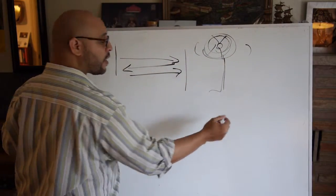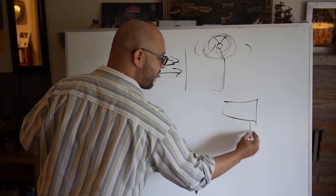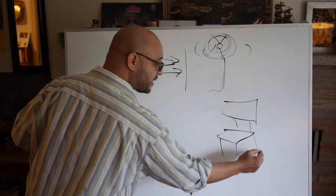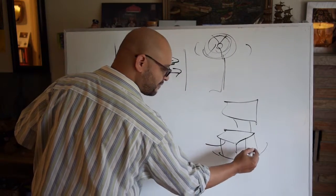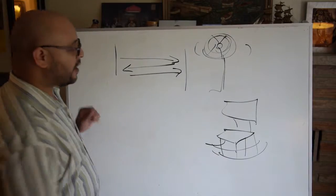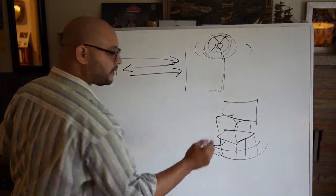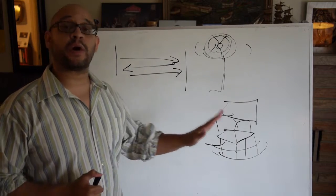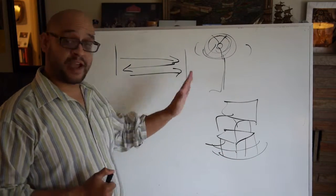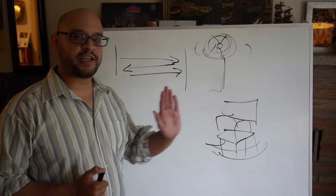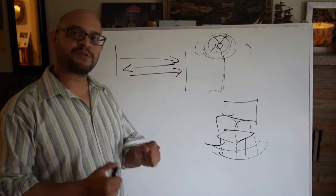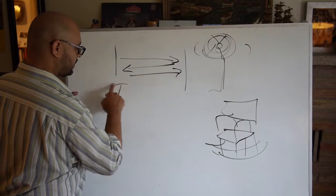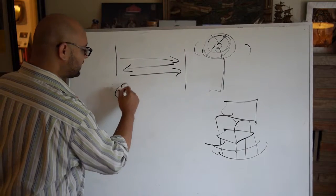Pretend that's a fan. It goes back and forth, or a rocking chair. Forgive my crude rocking chair. A rocking chair goes back and forth. It oscillates, right? It's not meant to go anywhere. The fan goes back and forth. It's not meant to take you to the mini mart. It goes back and forth. That's called oscillation.